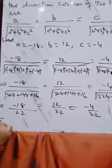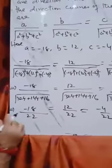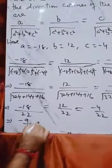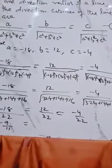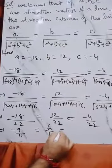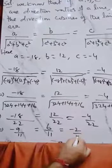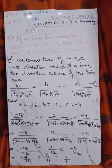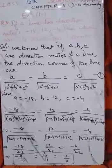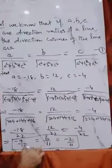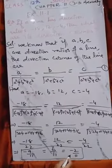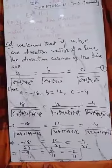After cutting we get minus 9 upon 11, 6 upon 11, and minus 2 upon 11. So these are the direction cosines. Now we can say that minus 9 upon 11, 6 upon 11, and minus 2 upon 11 are the required direction cosines.